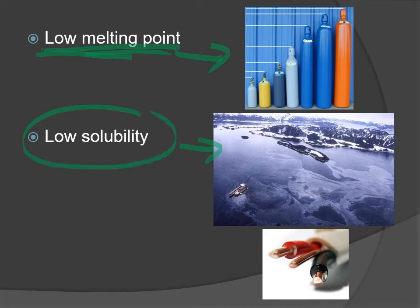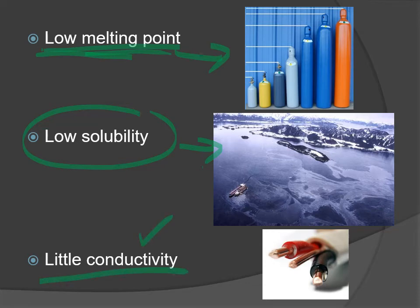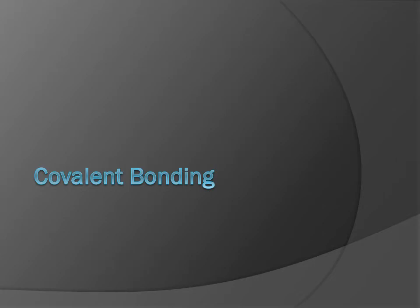Molecules tend to have low solubility, though it completely depends on the specific molecule - some do dissolve. They also have low conductivity; if you have a group of molecules they're probably not going to conduct electricity. Covalent bonding - sometimes called molecular bonding - describes molecules formed when atoms share electrons. That sharing of electrons is called a covalent bond, and molecules are held together by these covalent bonds.